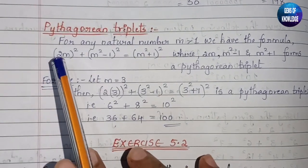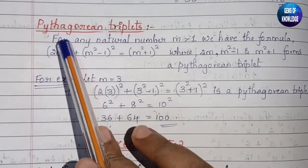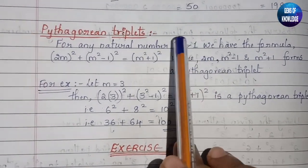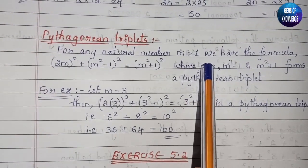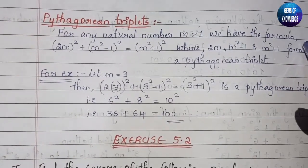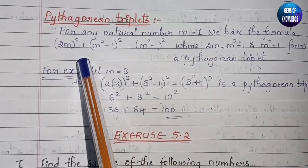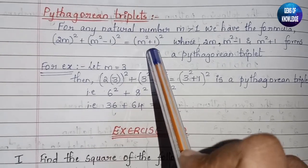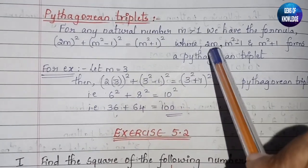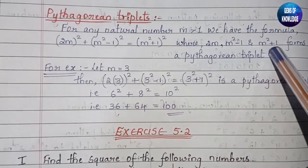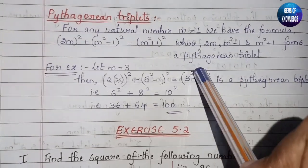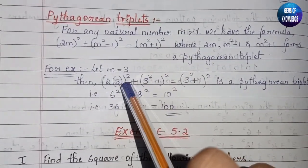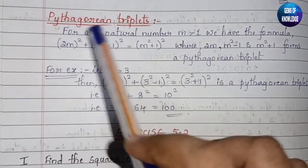According to your textbook NCERT, for any natural number m greater than 1, we have the formula: (2m)² + (m²-1)² = (m²+1)², where 2m, m²-1, and m²+1 form a Pythagorean triplet. This formula helps us understand what Pythagorean triplets are.